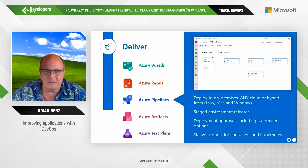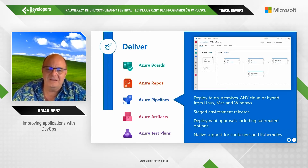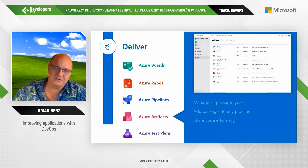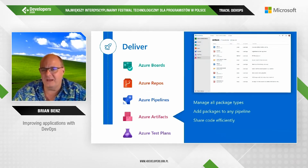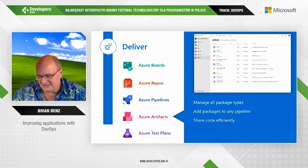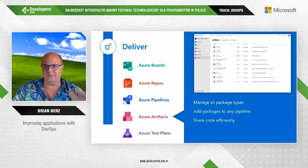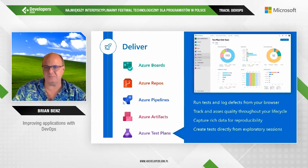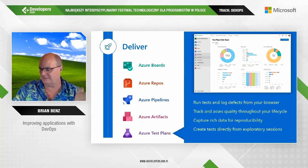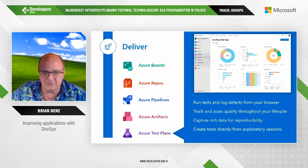Azure Pipelines includes build pipelines and release pipelines — they're processes that run on hosted machines to do builds, tests, and deployments. Azure Artifacts manages packages for package-managed applications like Node npm and Maven with Java. Azure Test Plans does website testing and load testing, and you can integrate it with your deployment process so that if the next version meets certain thresholds, it automatically moves to the next stage.